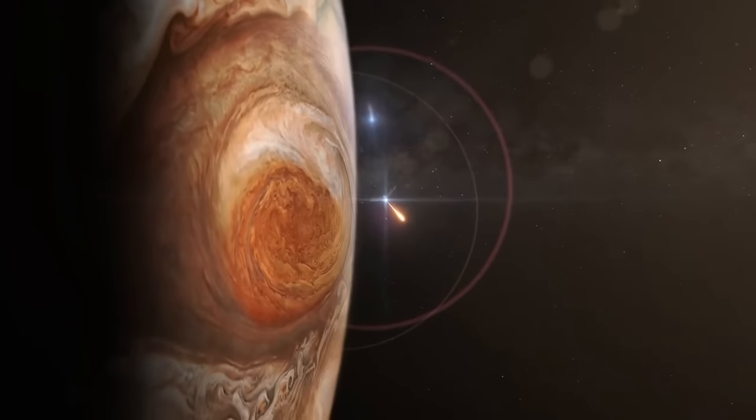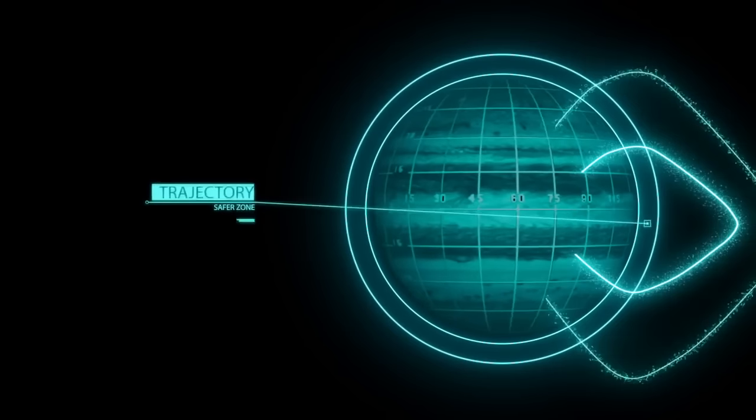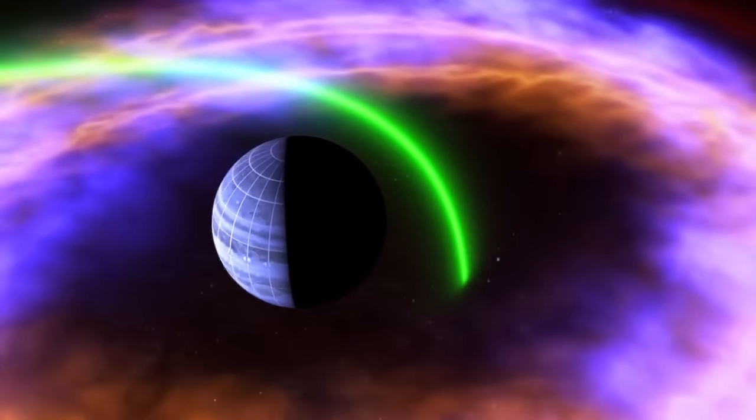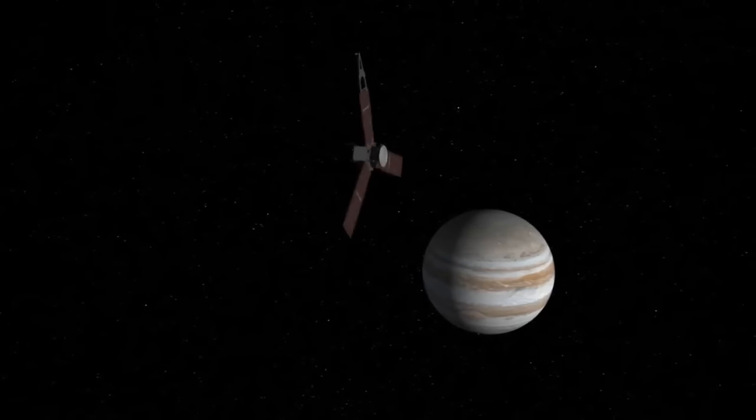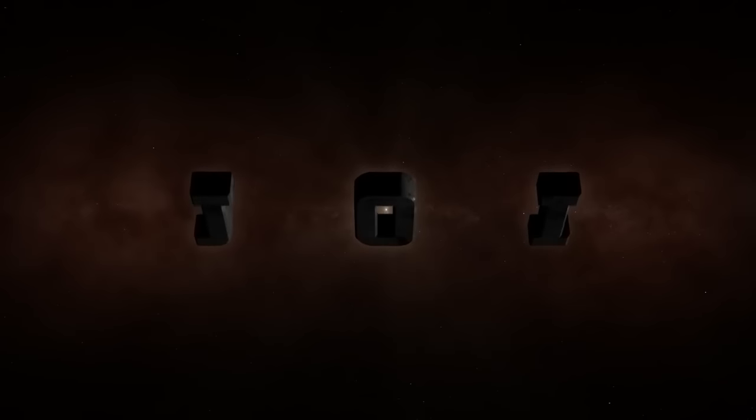So the real trick is, we're going to go in close, get the data, and then get out. And the first time we go in, that's the most dangerous. We call it Jupiter orbit insertion, JOI.